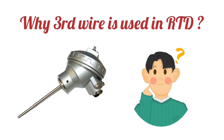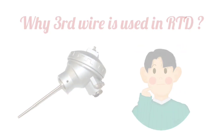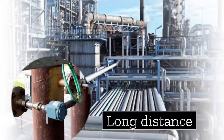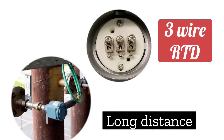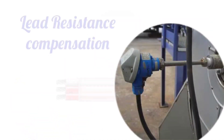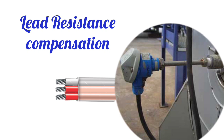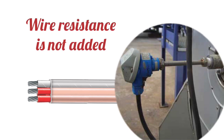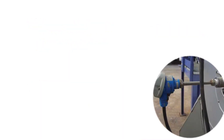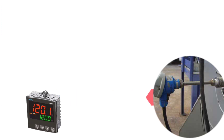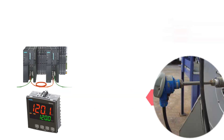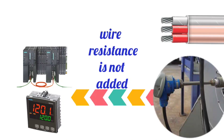Why is a third wire used in RTD? When the signal of an RTD needs to be carried over a long distance, a three-wire RTD is used. The third wire compensates for lead resistance, meaning that if the length of the wire is large, the wire resistance is not added to the measurement. So when the RTD is installed somewhere and its signal is taken far away — such as to a PLC or PID controller — the wire resistance does not affect the reading.